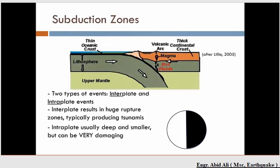They hit with little warning and can produce huge ground motion events. Interplate events result in huge rupture zones and can produce tsunamis. Intraplate events usually have smaller magnitudes but occur very deep beneath the ground surface. They can be very damaging because the source is directly beneath your feet.